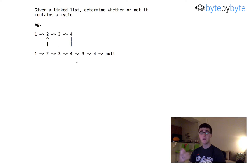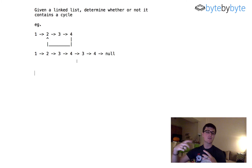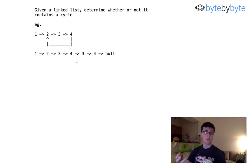Another possibility is you could ask whether or not you can mark the nodes. One way that we could do this would be to mark each node as true as you iterate through, and then you can see if you loop around back to a node that's already been marked. In this case we'll say that our node class can only contain the value and a pointer to the next node, so that option is off the table, but it's certainly something that you could ask and could very well be acceptable.